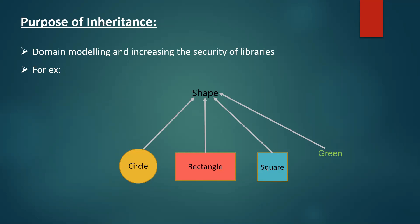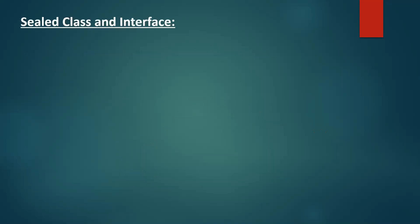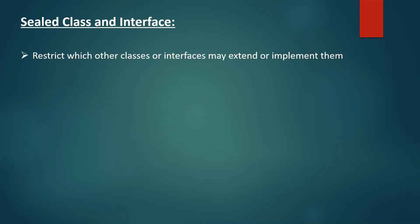We could make the shape class final, but that actually restricts any class from extending it. If we remove final, then any arbitrary class like green can extend shape. Here comes sealed classes. Sealed classes and interfaces, introduced in Java 15, restrict which other classes or interfaces may extend or implement them. In other words, a sealed class or interface can only be extended or implemented by the classes or interfaces that are permitted to do so.